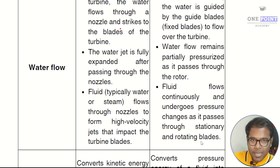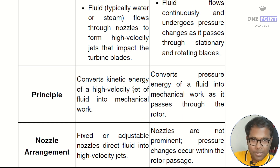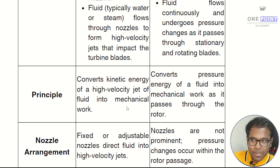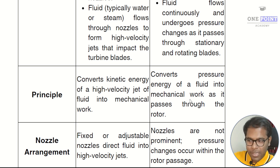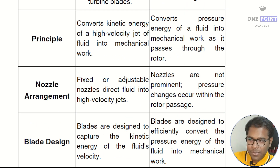The next difference is based on the working principle. An impulse turbine converts kinetic energy of a high-velocity jet of fluid into mechanical work, whereas a reaction turbine converts pressure energy of a fluid into mechanical work as it passes through the rotor. The next difference is based on nozzle arrangement: in an impulse turbine, fixed or adjustable nozzles direct fluid into high-velocity jets.